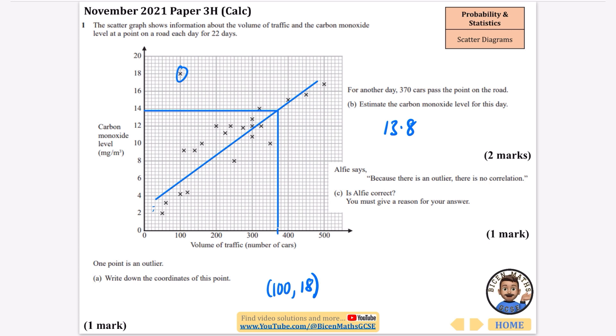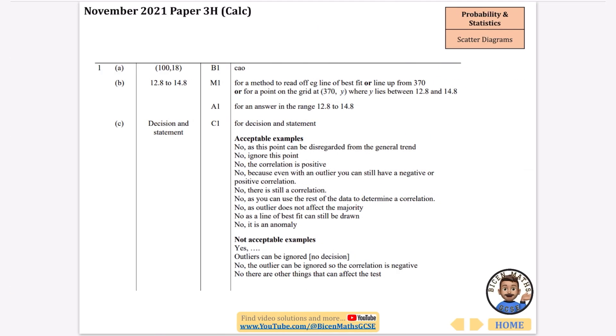We've got one of the marks for doing a line of best fit here. Alfie says because there is an outlier there is no correlation. Is Alfie correct? You must give a reason for your answer. No he's not correct because if you ignore it there is correlation for these ones. I'm going to say no, you should ignore the outlier and the rest are correlated. Let's double check. 118 and 13.8 is inside the region, in fact bang in the middle. No, you can ignore this point. It's absolutely fine. Lots of different things you could say here.